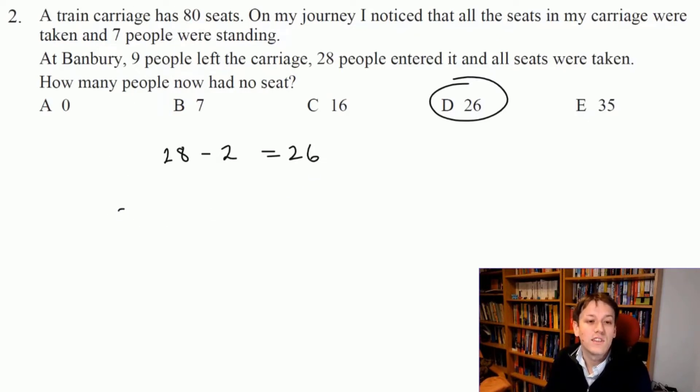You could also count the number of people on the train at each point if you find that easier. Initially there were 80 plus 7 or 87 people on the train. When 9 people get off there are then 78, and then 28 people get on. So we can add 28 to this and say there are 106 people on the train. 106 minus 80 is 26. But I think my first way is slightly faster. There are a few different ways you can do the ordering of the additions and subtractions here.